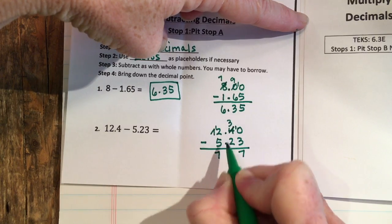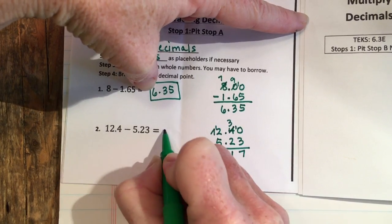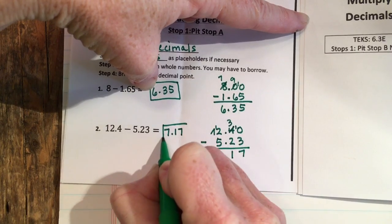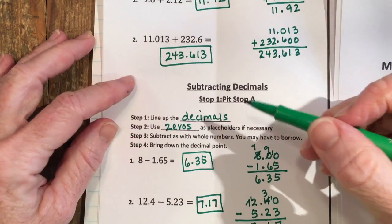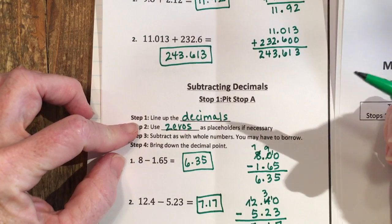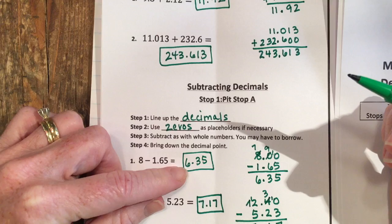All right, so that's adding and subtracting decimals. You want to start by lining up the decimals, using zeros as placeholders, and at the end just drop that decimal point again.